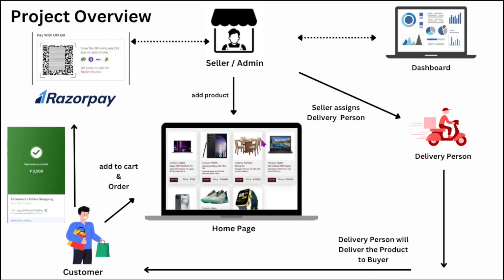Let's see the basic overview of the project. Our project contains three modules: the admin/seller module, the customer module, and the delivery person module. Firstly, the seller will log in and can add product categories and products into the system. As soon as products are added, they become visible on the home page. The seller also adds delivery persons into the system so they can deliver orders to customers.